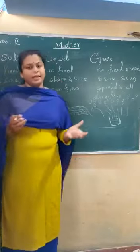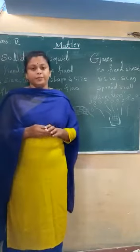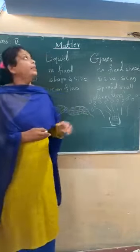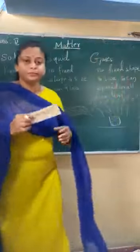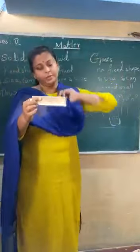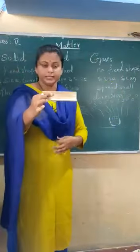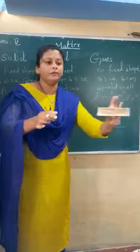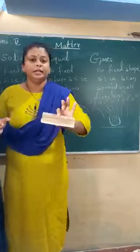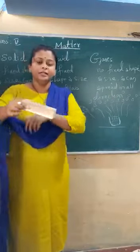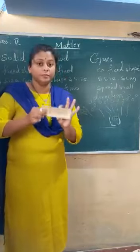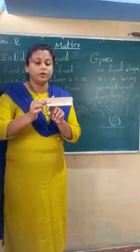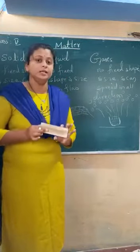Other than this, I can give many examples. I have a duster here — this is solid, because it has a definite shape and size. It will not flow here, there, downwards or sidewards. It is not going to flow. Because of this property, we call this one a solid.